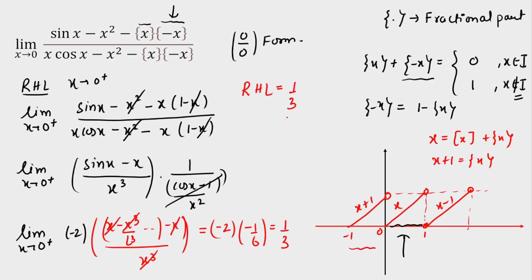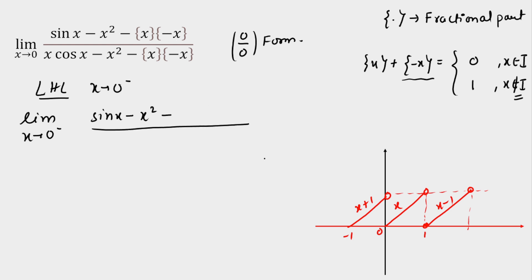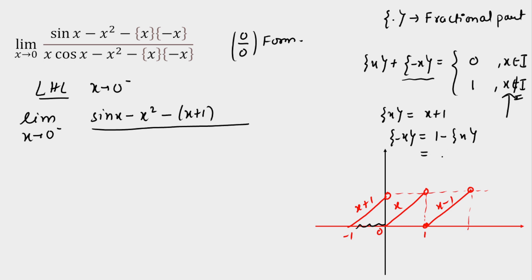Now I check the left-hand limit to see if LHL also equals 1/3; if not, the limit does not exist. For x tending to 0 negative, the numerator is sin(x) − x². In this region, {x} = x + 1. For {−x}, using the identity 1 − {x} = 1 − (x + 1) = −x. So {−x} = −x for x approaching 0 from the left.